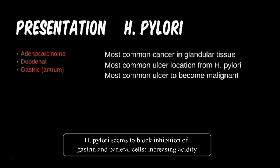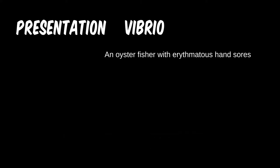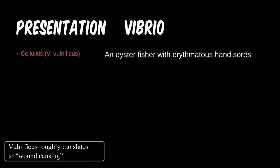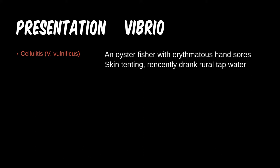For Vibrio, we had three species in this genus to consider. Most of us are aware of what cholera is and does, so let's add some gunner questions. Which of the three species discussed is associated with oysters? V. vulnificus can cause cellulitis and is often seen in the hands of those that handle oysters regularly, such as oyster farmers.